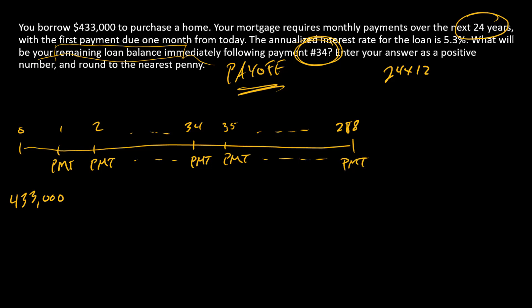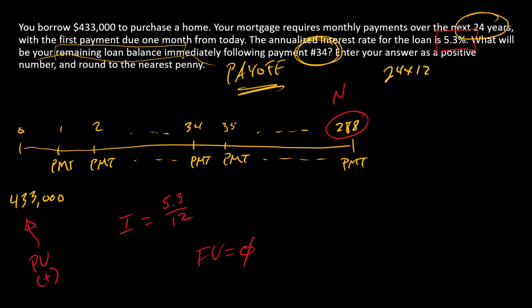I've already covered this in other videos, so I'm going to go through very quickly how to find the loan payment — straight to a financial calculator. PV is going to be positive $433,000 because it represents funds we can use today to purchase a house. The number of payments is 288 months. We need a discount rate: that's an annual rate, so to get the periodic monthly rate, we divide by 12 — so I is 5.3 divided by 12. FV is 0 because there is no remaining balance after the 288th payment. We solve for payment, which will be a negative number.